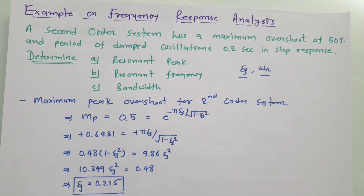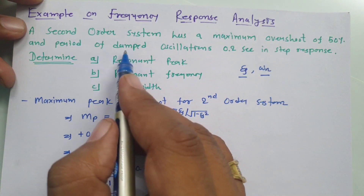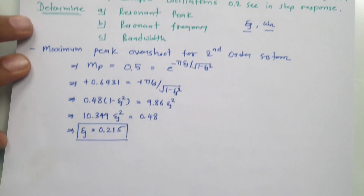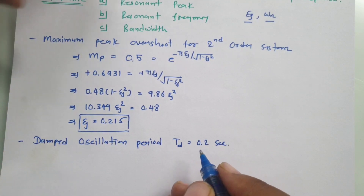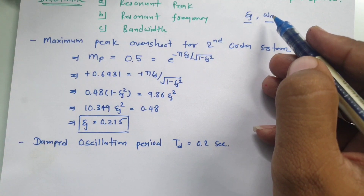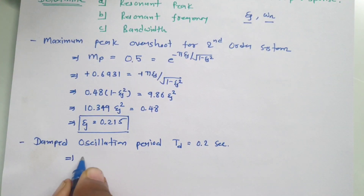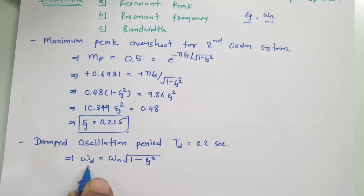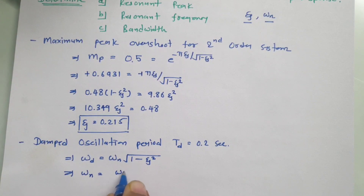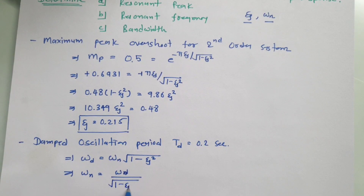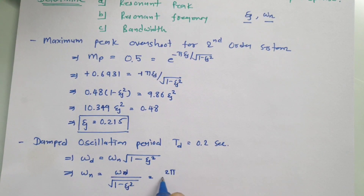Now to find ωn, we use the period of damped oscillation. The damped oscillation period is td, and the key relation is ωd = ωn × √(1 − ζ²), so ωn = ωd / √(1 − ζ²). We also know that ωd = 2π / td.